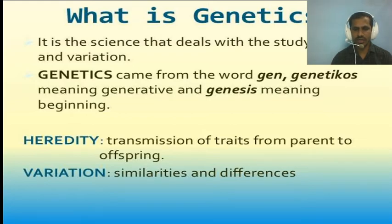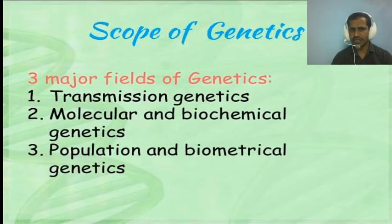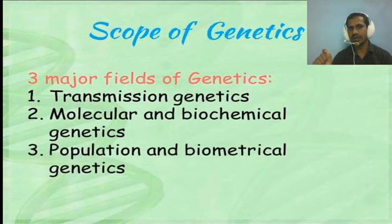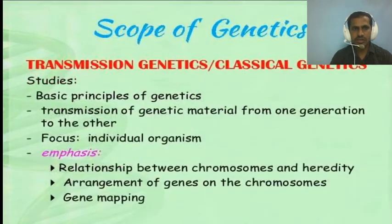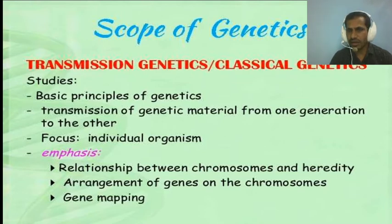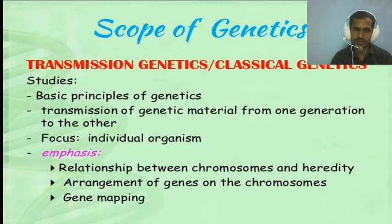There are three major fields or scopes of genetics: first, transmission genetics; second, molecular and biochemical genetics; third, population and biomedical genetics. Transmission genetics is also called classical genetics. It covers the basic principles of genetics and the transmission of genetic material from parent to offspring, or from one generation to another.